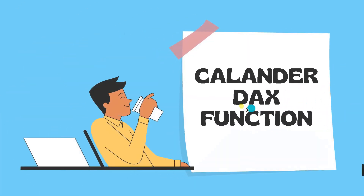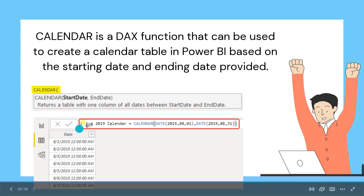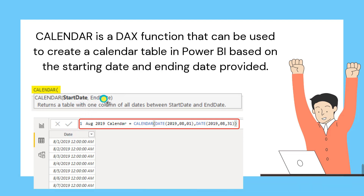The next DAX function is CALENDAR. The CALENDAR function is used to create a calendar table in Power BI based on a starting date and ending date. It creates a table containing a single Date column with values between the start date and end date. The syntax is: write the CALENDAR keyword, then inside the bracket pass two arguments — start date and end date.